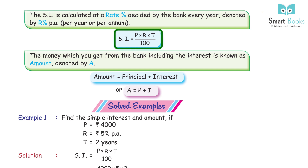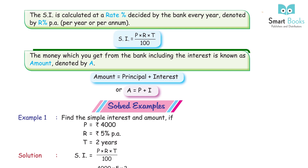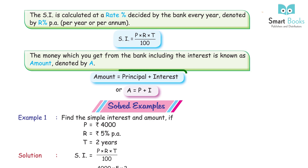SI equals P × R × T ÷ 100. The money you get from the bank including the interest is known as amount, denoted by A.